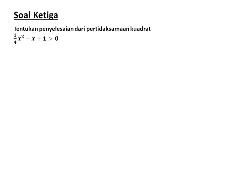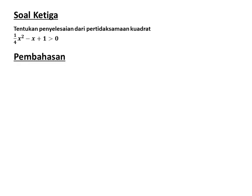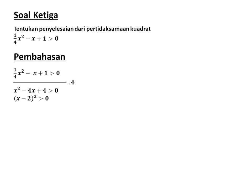Soal ketiga: tentukan penyelesaian dari pertidaksamaan ¼x² - x + 1 > 0. Ruas kanan sudah 0, tetapi koefisien x² bernilai pecahan, sehingga untuk mempermudah, kalikan kedua ruas dengan 4. Diperoleh x² - 4x + 4 > 0. Difaktorkan: (x - 2)(x - 2) atau (x - 2)². Sehingga akarnya kembar, yaitu x = 2.